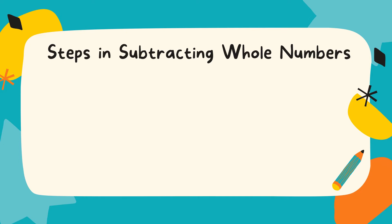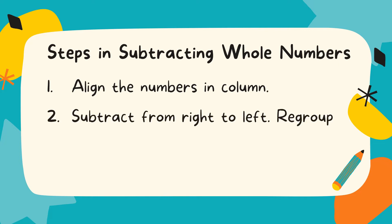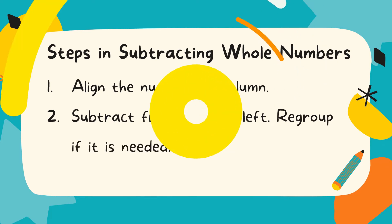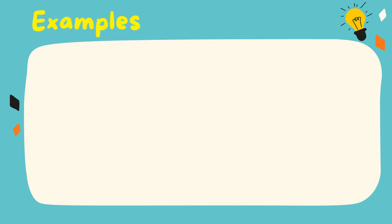These are the steps in subtracting whole numbers. Number 1, align the numbers in column. Number 2, subtract from right to left. Regroup if it is needed.